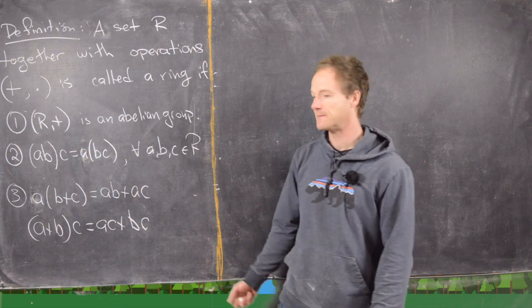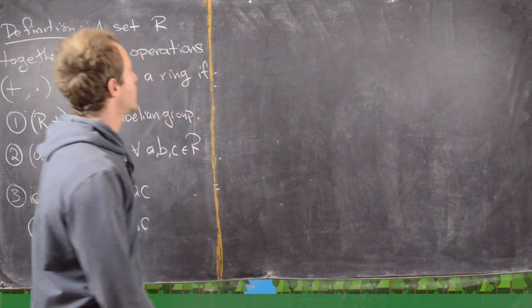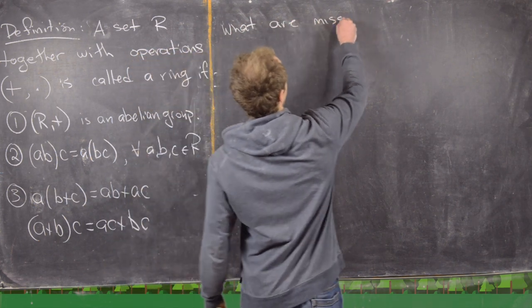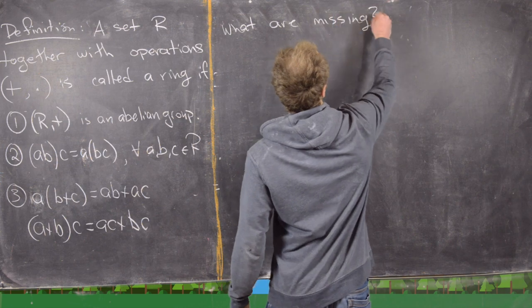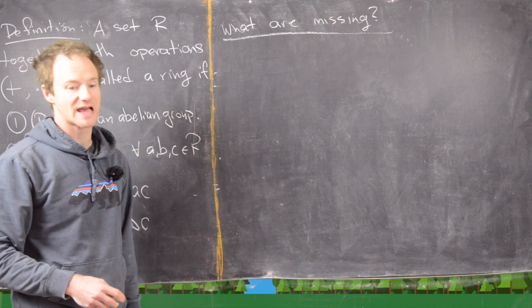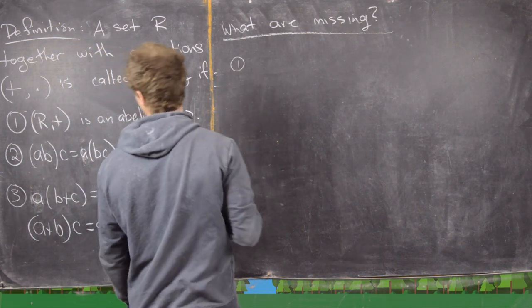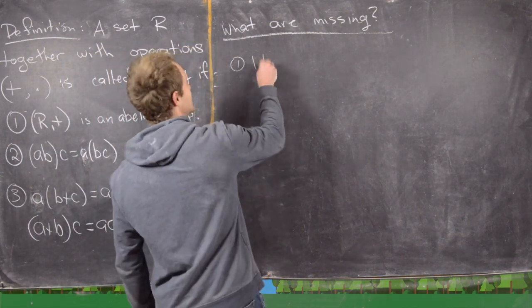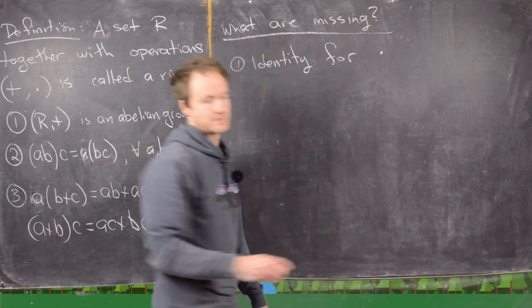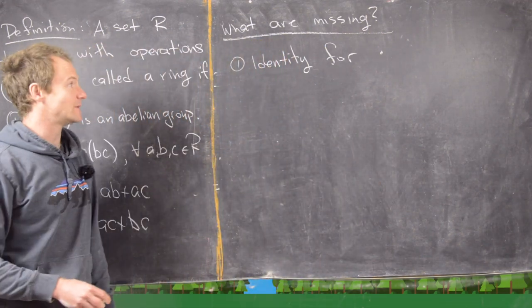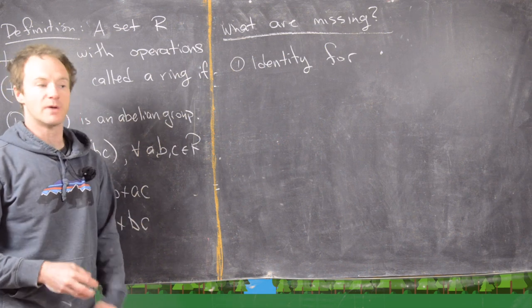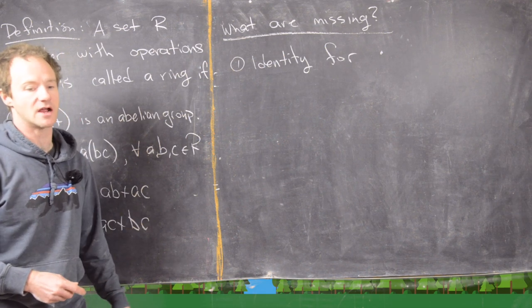So let's maybe real quick notice what are we missing that we would maybe like to have. And there are three main things that we're missing. The first one would be an identity for multiplication. And it's true sometimes we will have an identity for multiplication and that'll be a special type of ring, but we don't need that for the structure to be called a ring.